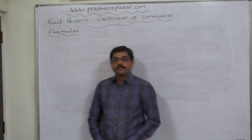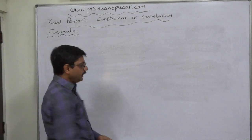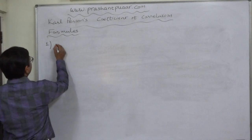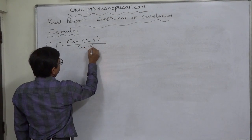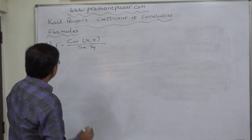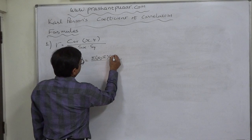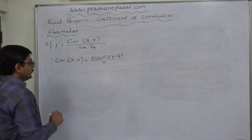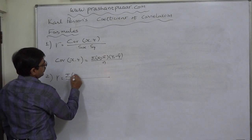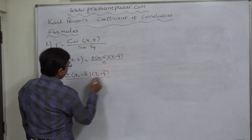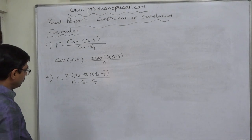Welcome friends. Now we are going to study some formulas for calculation of Karl Pearson's coefficient of correlation. The first formula given by Karl Pearson is by definition: the coefficient of correlation is the ratio of covariance of x and y to the product of the standard deviations of x and y. The covariance of x and y is the mean of products of deviations taken from the arithmetic mean. Substituting this formula of covariance, we get: sigma of (x minus x-bar) into (y minus y-bar) divided by n, divided by sx into sy.